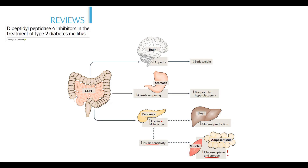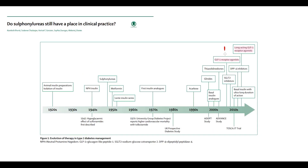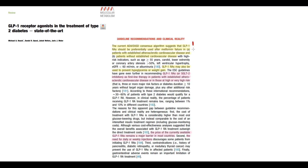GLP-1 receptor agonists cause decreasing glucagon secretion, that results in decreasing glucose production. They decrease appetite, which causes weight loss. And also they delay gastric emptying, that decreases the severity of postprandial hyperglycemia. As we see, GLP-1 receptor agonists are among the most modern drugs in treatment of diabetes. According to American guidelines, GLP-1 receptor agonists are the second-line drugs in treatment of diabetes and established cardiovascular disease.